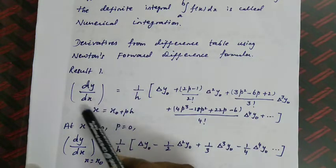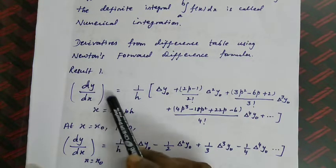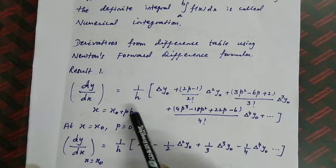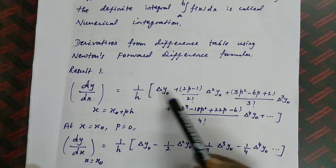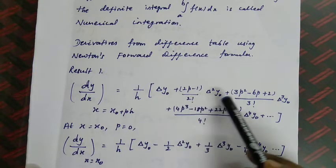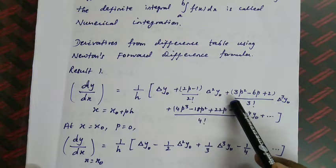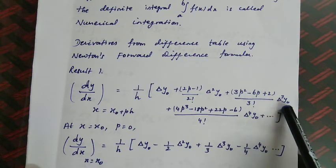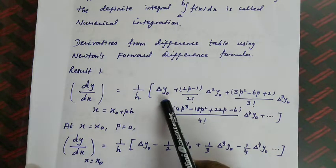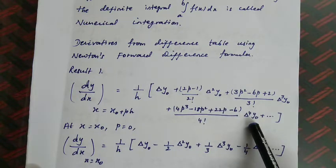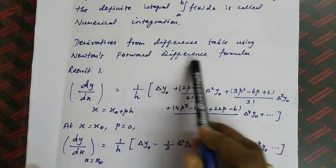Result 1: dy/dx at the point x = x₀ + ph is given by: (1/h)[Δy₀ + (2p−1)/2! · Δ²y₀ + (3p²−6p+2)/3! · Δ³y₀ + ...]. The values Δy₀, Δ²y₀, Δ³y₀, Δ⁴y₀ are taken from the forward difference table.